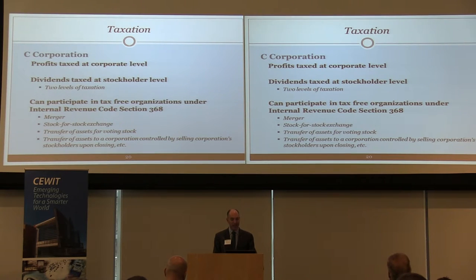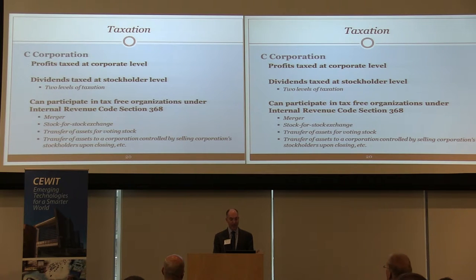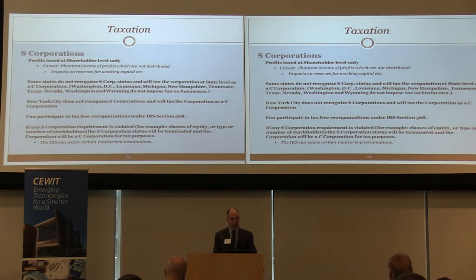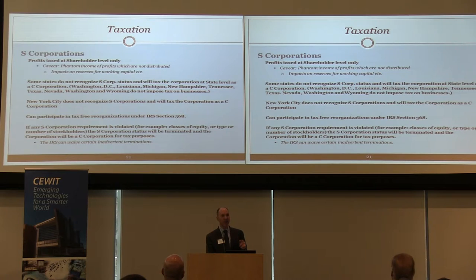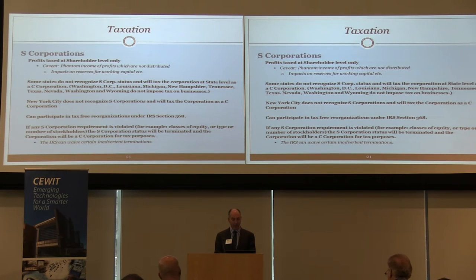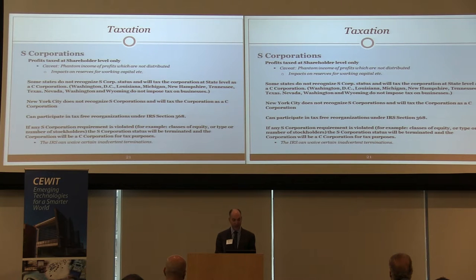On taxation: C corporations get taxed twice — the corporation makes a profit and gets taxed, then those profits distributed to shareholders get taxed again. Corporations can participate in tax-free reorganizations like mergers. S corporations have profits taxed only at the shareholder level; the corporation itself is not taxed. However, if the corporation doesn't distribute those profits, shareholders still have to pay tax — important if you want reserves for working capital. On the state level, some states don't recognize S-corps and will tax them as C-corporations; New York City, for example, doesn't recognize S-corporations. Otherwise, S-corps can participate in tax-free reorganizations as well.